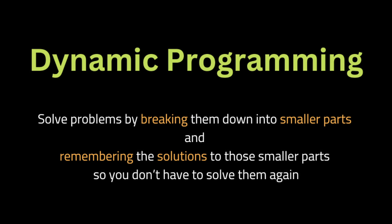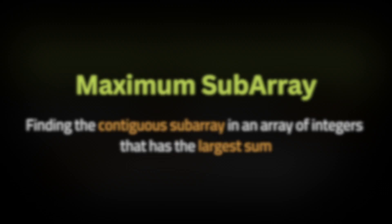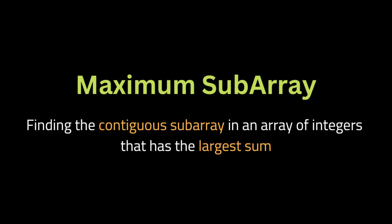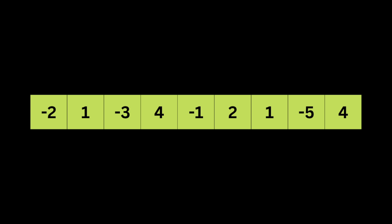The first way to solve this problem is by using dynamic programming. Dynamic programming is a way to solve problems by breaking them down into smaller parts and remembering the solutions to those smaller parts so you don't have to solve them again. The maximum subarray problem is a classic problem in computer science — it involves finding the contiguous subarray in an array of integers that has the largest sum.